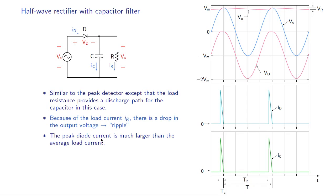The peak diode current turns out to be much larger than the average load current. The peak diode current means the maximum instantaneous current that flows through the diode, and that is much larger than the average value of the resistor current I_R. This is important because when diodes are fabricated, each diode has a certain maximum current limit — for example, some diodes may handle only 10 milliamps, others up to 10 amperes. When designing this circuit, we must know the maximum current that will flow through the diode and choose a diode with a current rating higher than that value.